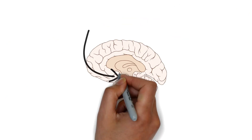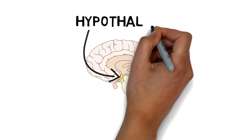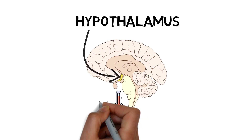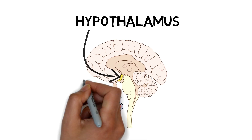Right below the thalamus is the hypothalamus, which sits above the roof of your mouth near the pituitary gland. What does this do? Well, it maintains homeostasis. Via the pituitary gland, it releases hormones around the body and controls your body temperature, thirst and sleep.